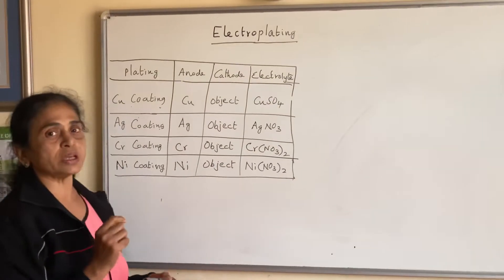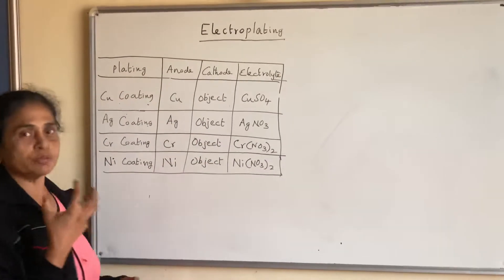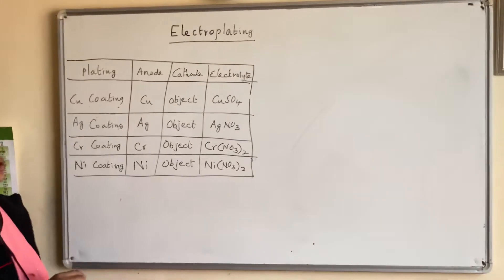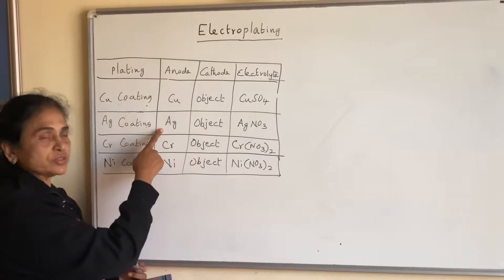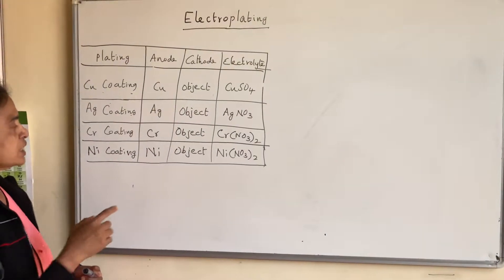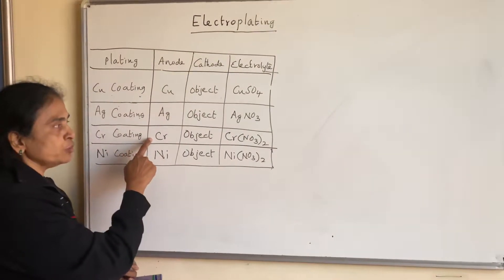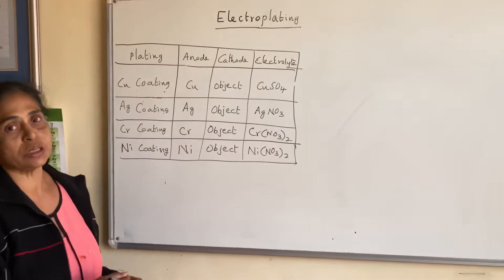That means Cu2+ ions must be present in large quantities in that solution. So you must take a concentrated solution of copper sulphate as an electrolyte. If you want to give a coating of silver, silver nitrate solution must be used. If you are doing chromium coating, chromium nitrate should be used. A similar thing is used in nickel also.